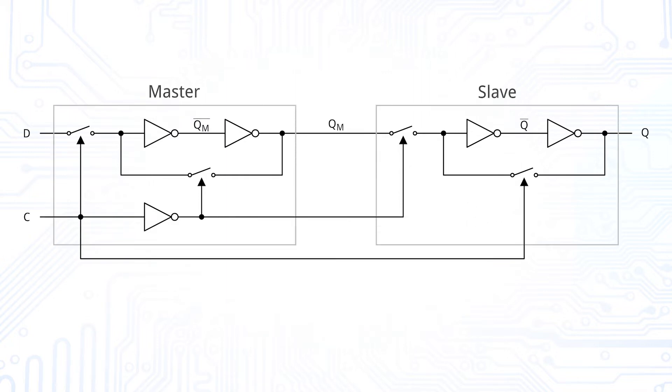Let us examine that structure and see what happens. If C is low, then the master, which is the first D-Latch, keeps its former state and the slave, the second D-Latch, is transparent. So it simply feeds the input to the output.